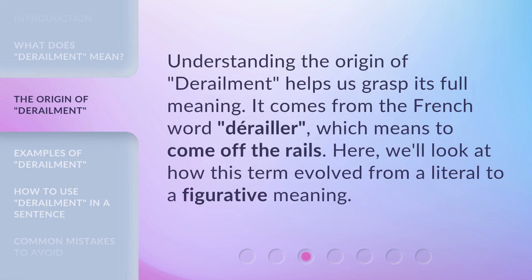Understanding the origin of derailment helps us grasp its full meaning. It comes from the French word derailleur, which means to come off the rails. Here, we'll look at how this term evolved from a literal to a figurative meaning.